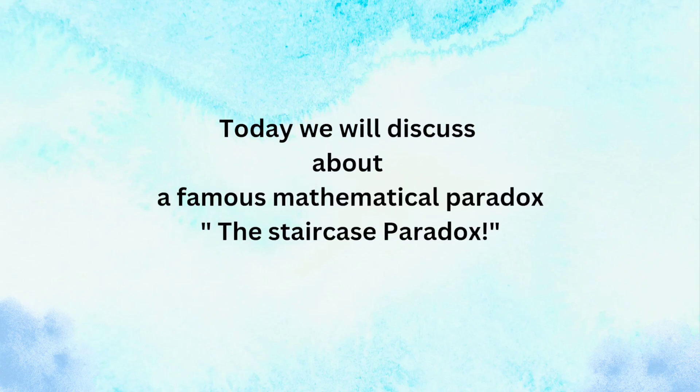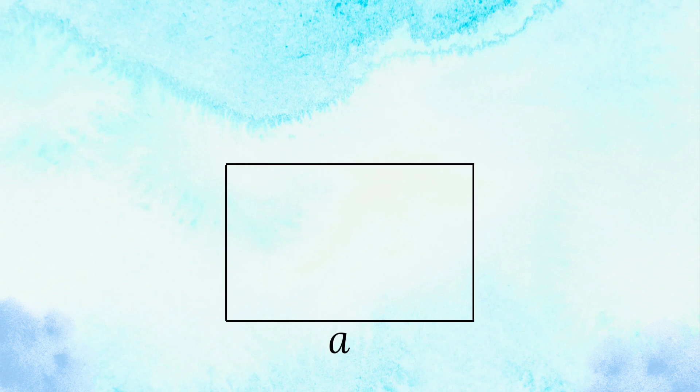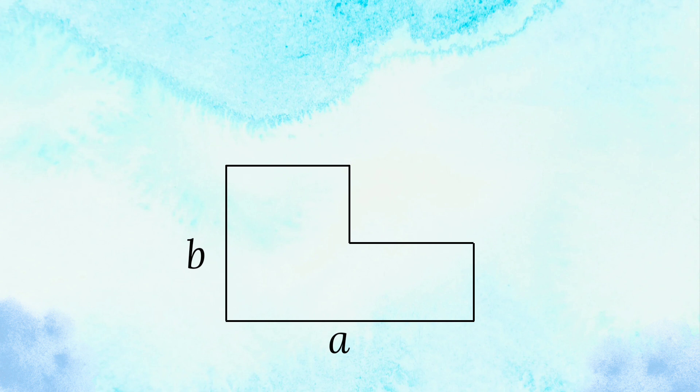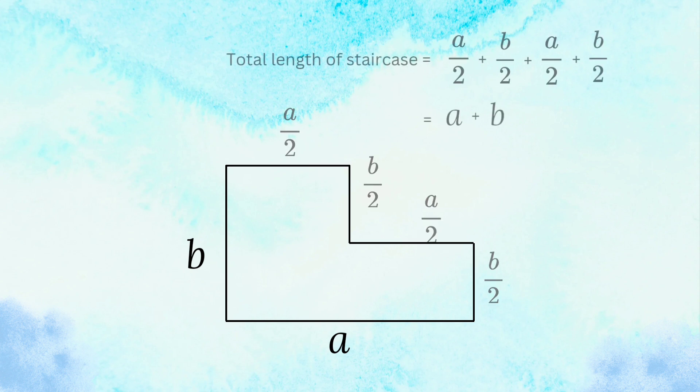Today we will discuss a famous mathematical paradox, the staircase paradox. First, we will take a rectangle of length A and width B. Now we will cut one-fourth part of it and make a stair of two steps. The total length of the staircase is the sum of 2 times A/2 and 2 times B/2, which is A plus B.